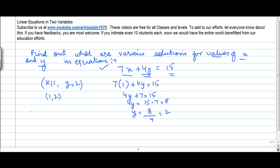Let's take x is equal to 0. So then what we get is 7 into x or 0 plus 4y is equal to 15. 4y is equal to, this will become 0, so 15. Or y is equal to 15 divided by 4. So if x is equal to 0, y is equal to 15 divided by 4.